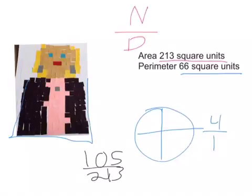And that is the perimeter and area of my shape, what is area and perimeter, and fractions, and what is the fractions of each color.